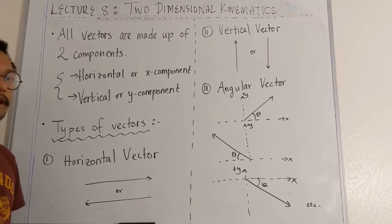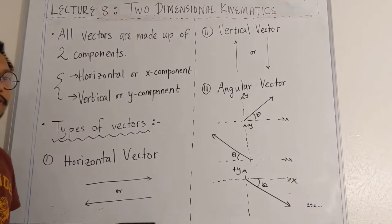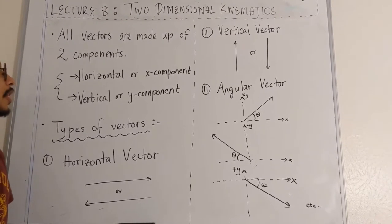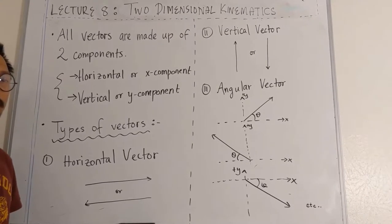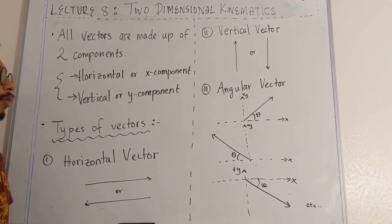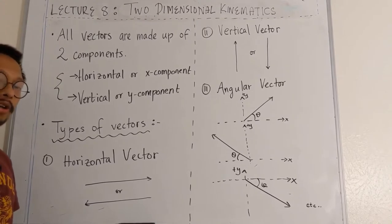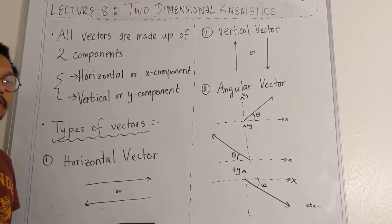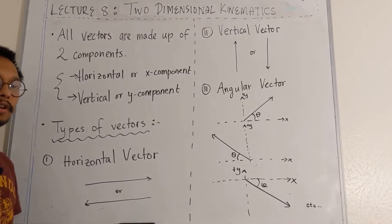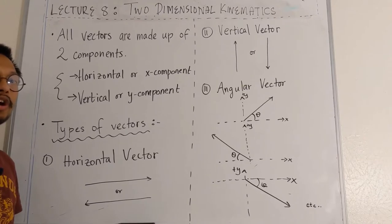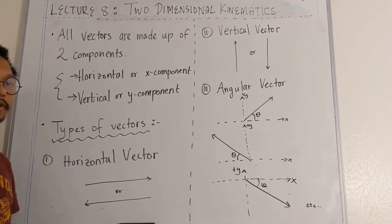We have already had some exposure to vectors in previous chapters, so I would just like to remind you that all vectors are made up of two components or two parts. We call them either horizontal components or vertical components. Horizontal components are the parts of the vectors that are along the horizontal or x-axis. The vertical components likewise are the parts of the vectors which are along the y-axis or the vertical axis.